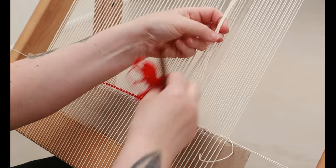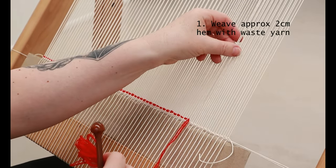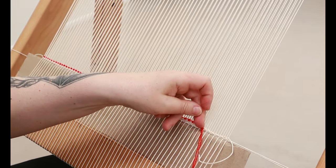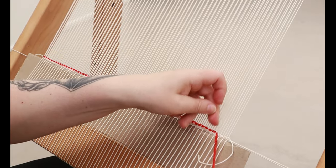Next we're going to weave the hem with some waste yarn. I like to weave about two centimeters or just under one inch of hem. That gives it enough room to be able to overlock the edge and then fold it over.